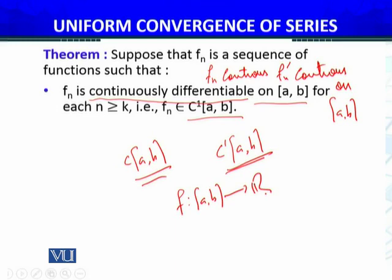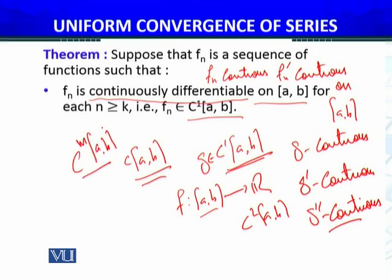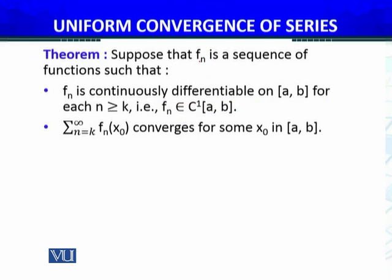In real analysis, the domain and codomain consist of real numbers. So C¹[a,b] is the set of functions where g belongs to C¹[a,b] means g is continuous and g', the first derivative, is also continuous. Similarly, C²[a,b] means g'' is also continuous, and Cᵐ[a,b] means up to the mth order derivative is continuous. In other words, if fₙ is continuously differentiable on [a,b] for each n ≥ k, it means fₙ belongs to C¹[a,b]. This is a stronger condition — we are assuming not just continuity of fₙ but also continuity of its first derivatives.